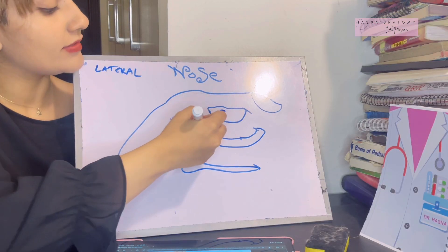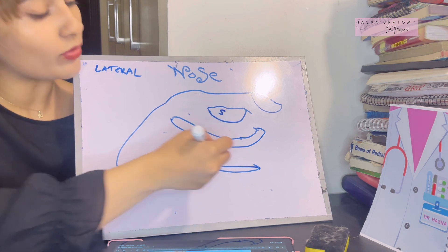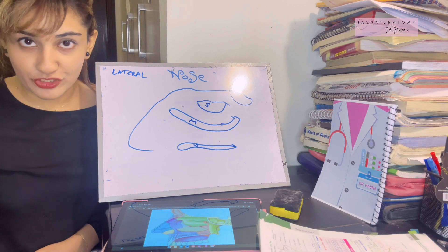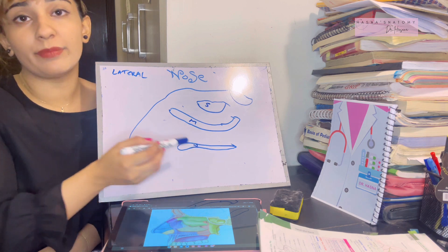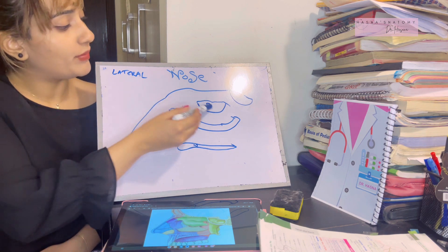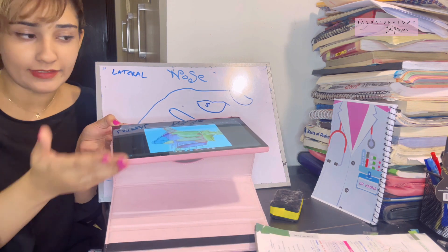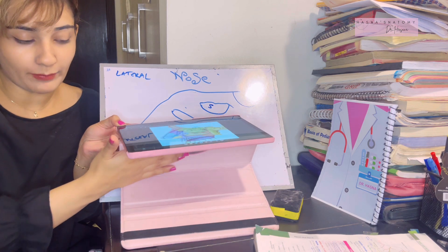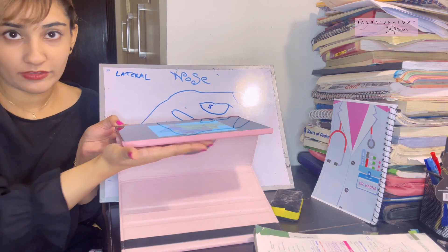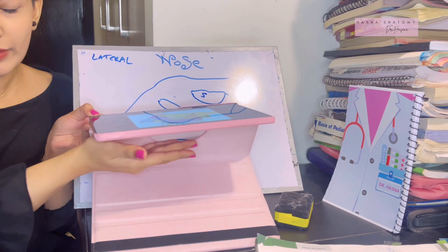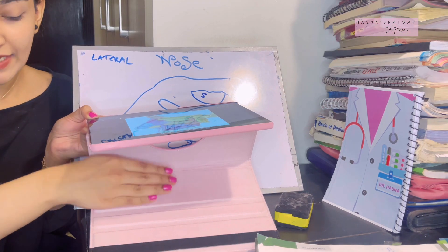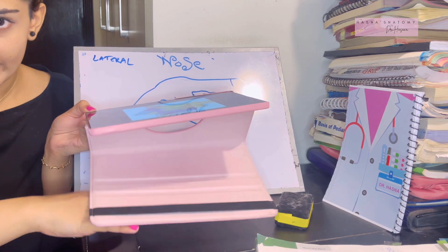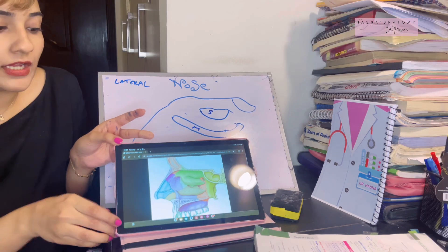This is the superior, this is the middle, and this is the inferior concha. Because of these three shelf-like projections, there are three grooves that are being formed beneath each concha. Beneath that projection, there will be this groove-like area. This will be known as the meatus. And then the next projection will come, and beneath that, another groove, and so on.